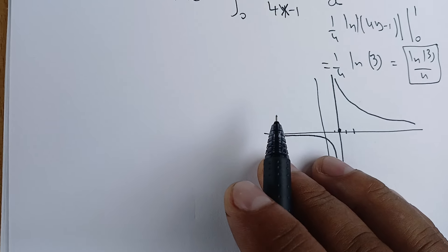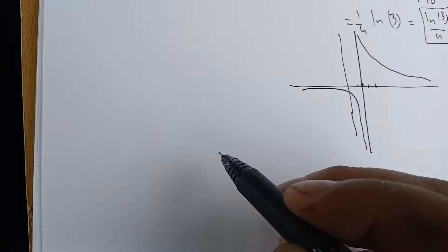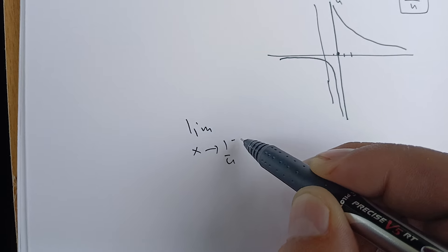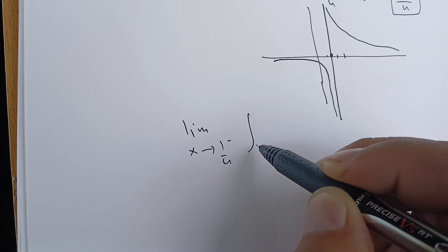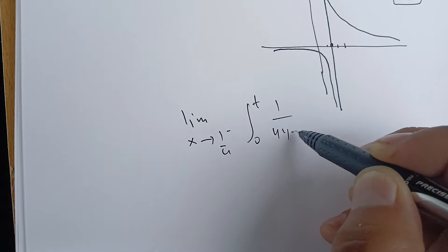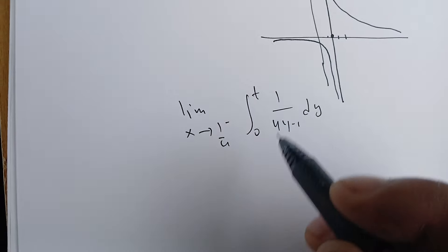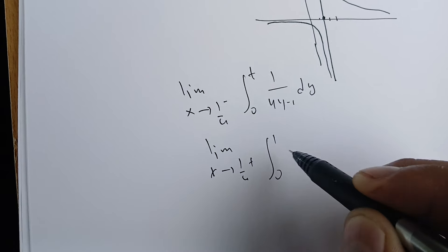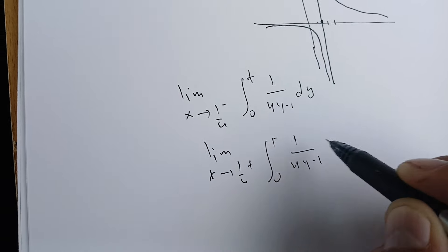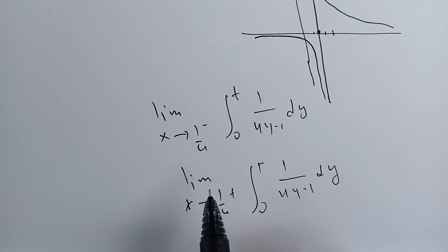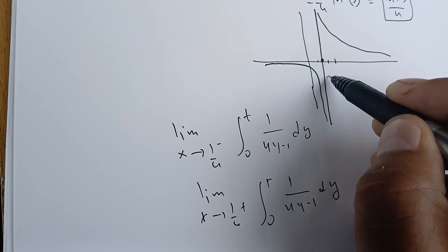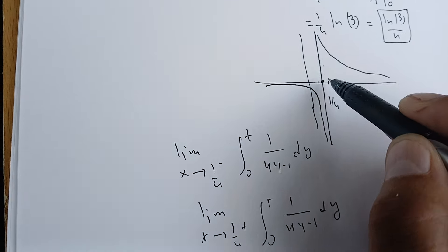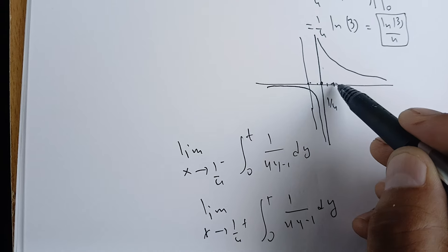So what we need to do is compute the limit as x goes to 1/4 from the left for this integral, and after that compute the integral from the right as well. We have an asymptote here, and we are trying to find the area between 0 and 1, but there is a discontinuity in the middle.